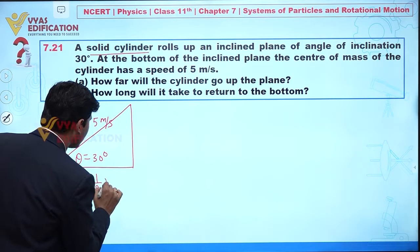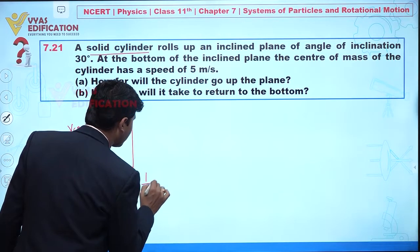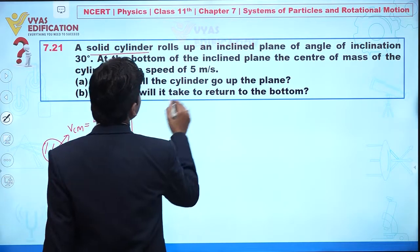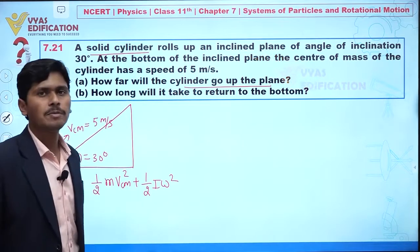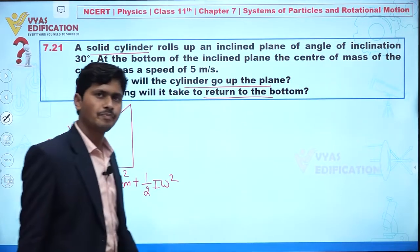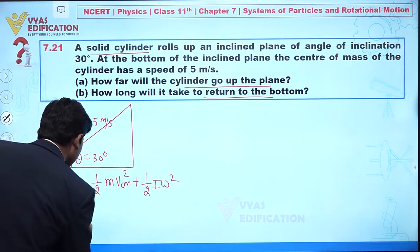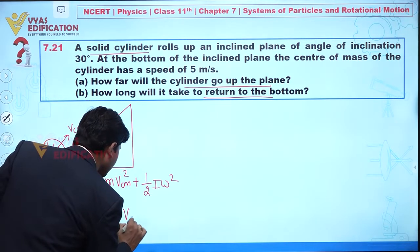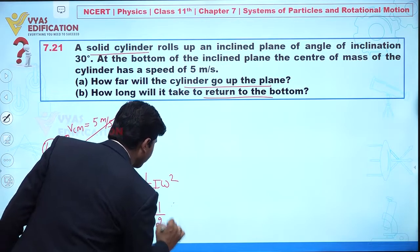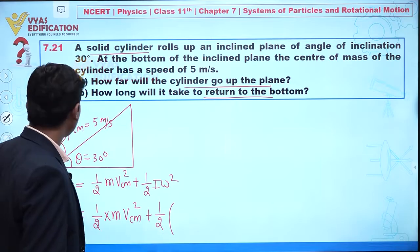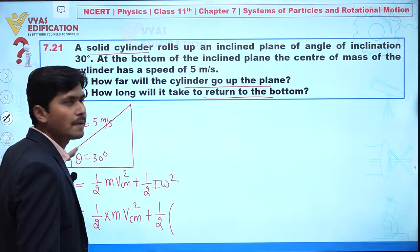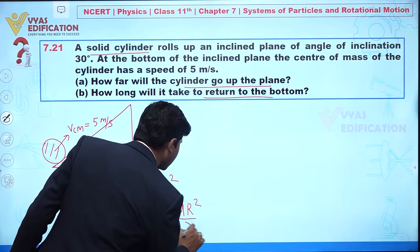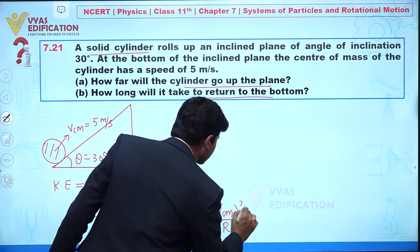So kinetic energy is given by: ½mv_cm² + ½Iω². For a solid cylinder, the moment of inertia I = mr²/2, and we can write ω = v_cm/r. Substituting these into the kinetic energy expression gives us ½mv_cm² + ½ × (mr²/2) × (v_cm/r)², and the r² terms cancel out.